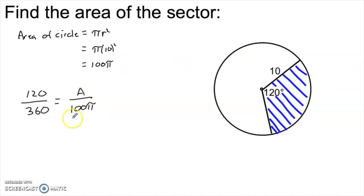When I have big numbers like this, I do like to simplify if possible. So for example, with 120 over 360, I could divide the numerator and denominator by 10. That would just give me 12 over 36. I can simplify that even further to just one third. Cross multiplying then gives me 3A is equal to 100 pi, which means the area of that sector is 100 pi divided by 3.